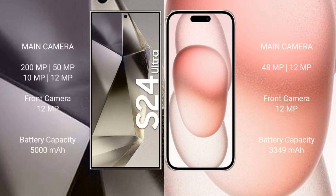Samsung Galaxy S24 Ultra features a quad rear camera setup: 200MP plus 50MP plus 10MP plus 12MP, with a 12MP front camera. iPhone 15 features a dual rear camera setup: 48MP plus 12MP, with a 12MP front camera.